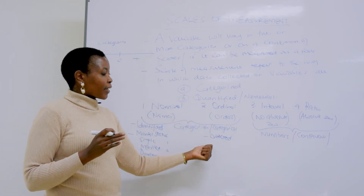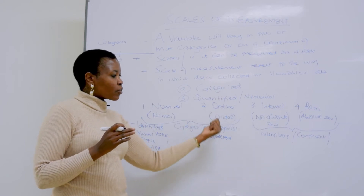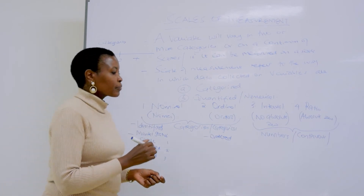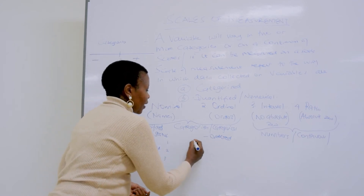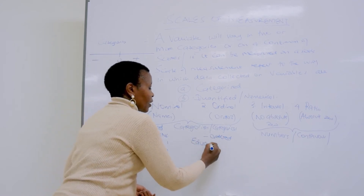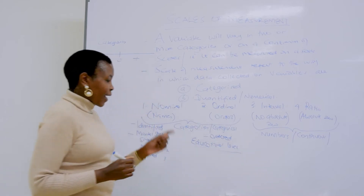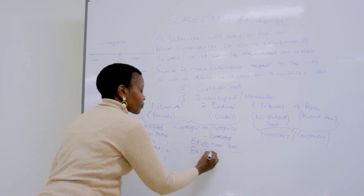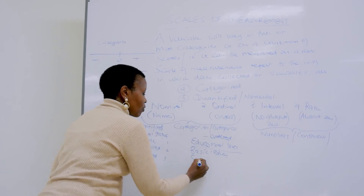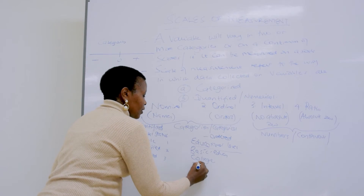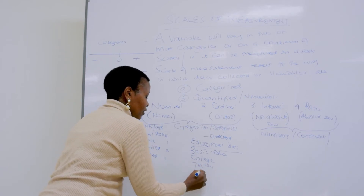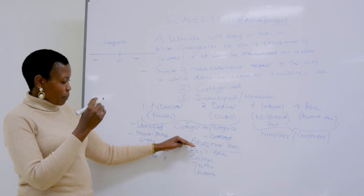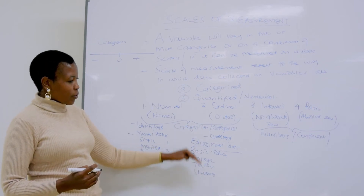When you assign values at the ordinal level, they reflect either high to low, low to high, or least to most, etc. For example, educational level — there is some order. We can start from the lowest level, maybe basic education, then college education, then tertiary education, then university education. There is order from the highest to the lowest or from the lowest to the highest.